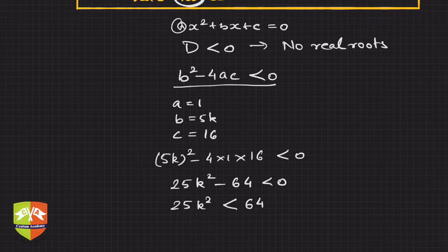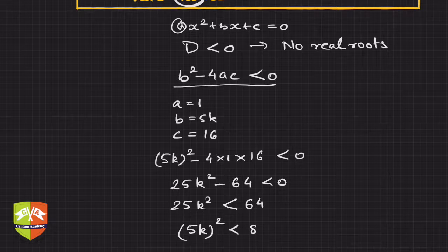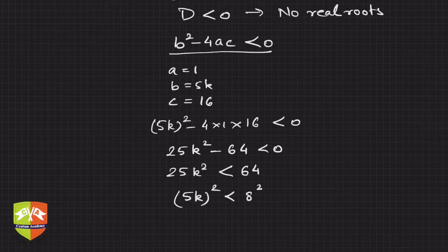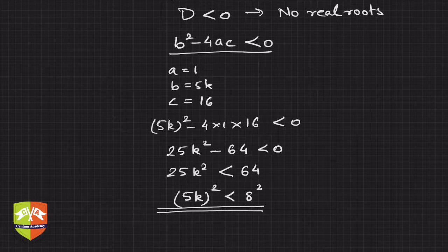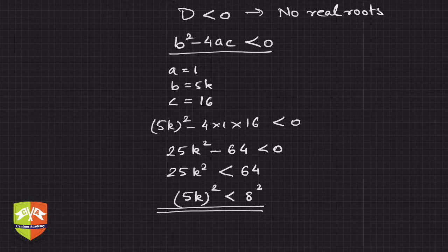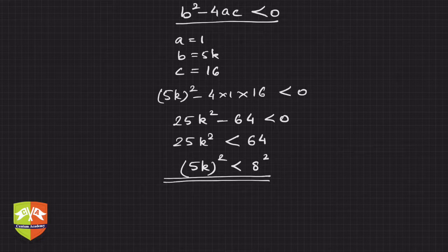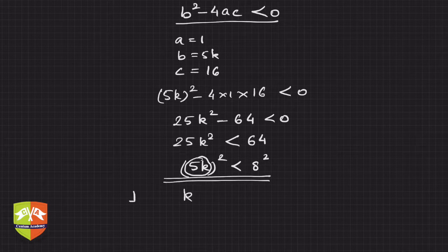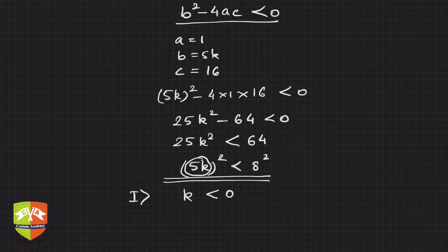So 25k² must be less than 64, or (5k)² must be less than 8². Now, 5k has no restriction — k can be negative or positive. Let's consider two cases: case one where k is less than 0, and case two where k is greater than 0.